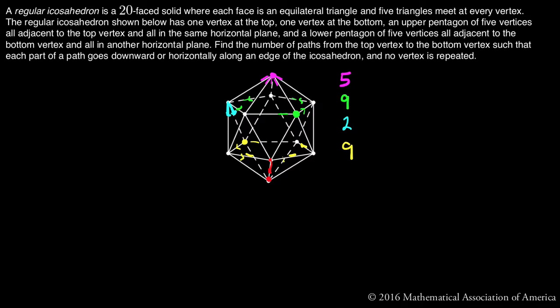So all we do is multiply all this stuff up: five choices for the first times nine choices for the second times two choices for the triangles in the middle times nine choices for the last will give me five times two is 10, nine times nine is 81, 10 times 81 is 810.